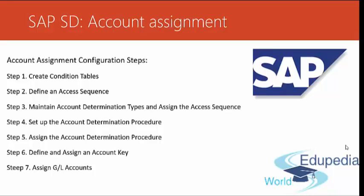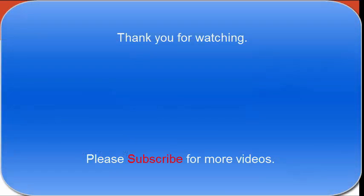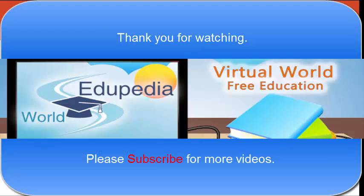We have successfully completed all necessary steps for account assignment configuration: we created condition tables, defined an access sequence, maintained account determination types and assigned the access sequence, set up the account determination procedure, assigned the account determination procedure, defined and assigned an account key, and in our final step we assigned General Ledger Accounts. Thank you for watching Edupedia World videos.